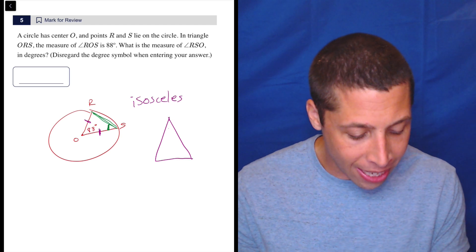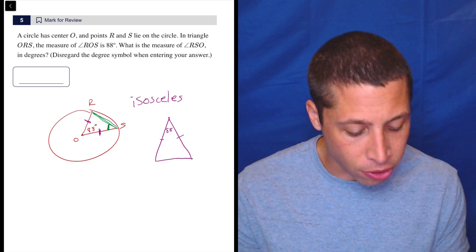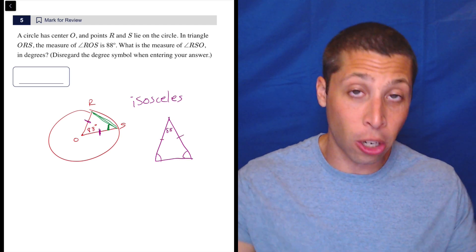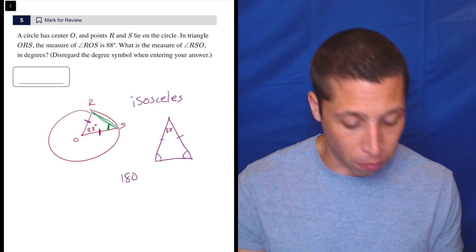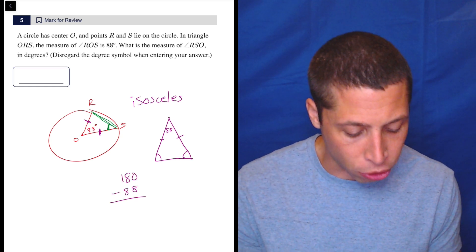An isosceles triangle has two congruent sides and they're going to be opposite two congruent angles. So in this case, the 88 is up here. If these sides are the same, then these angles across from those sides also have to be the same. And we know from the reference chart, from just hopefully memory, there are 180 degrees in a triangle.